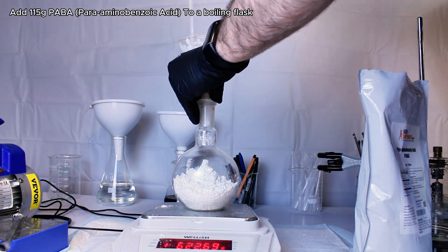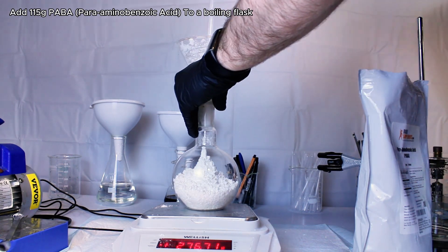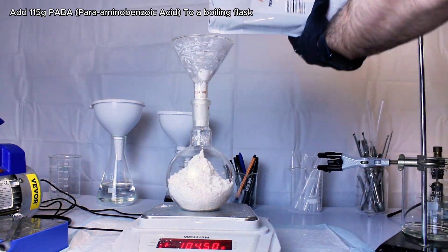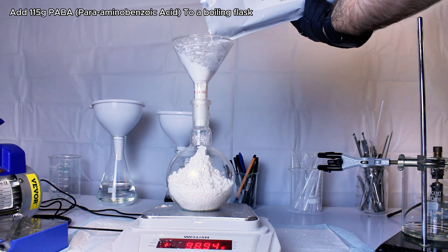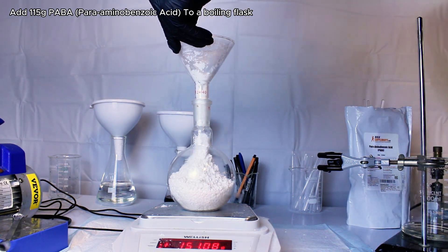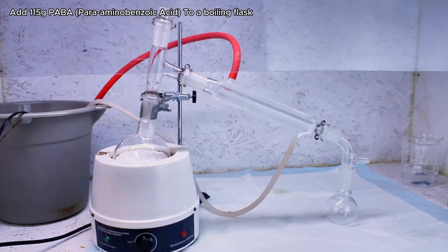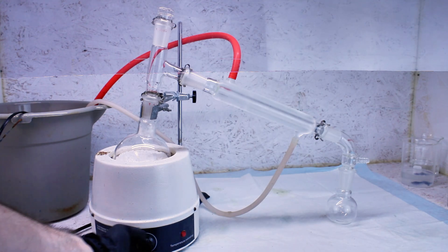To get started, I add 115 grams of PABA to a boiling flask. Initially I only added 100 grams, but added 15 more off camera once I realized I could pack it down somewhat. This was then set up for a basic distillation and heated at my heating mantle's maximum temperature.